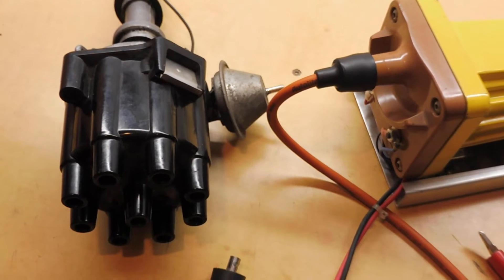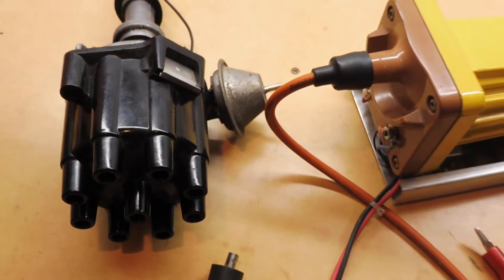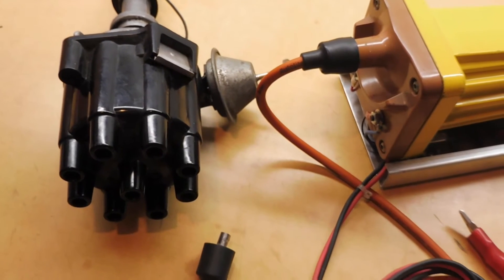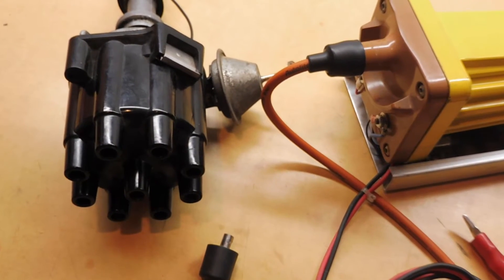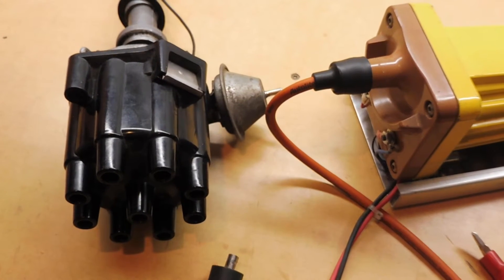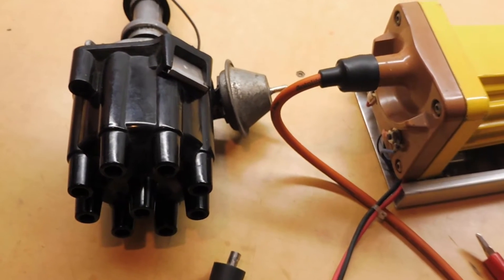You try starting it, it won't start. So you get out and you check under the hood and you find that there's no spark. That could be a lot of things. It could be your ignition switch, the power to the coil, the coil itself, the condenser or the points inside the distributor.